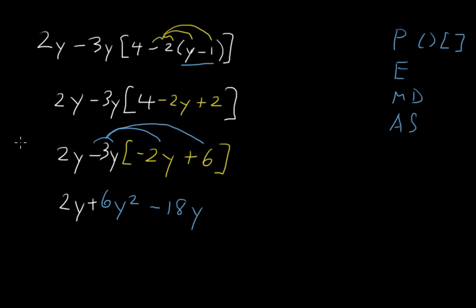Now we can combine like terms. For our final answer we have 6y squared. We have 2y and negative 18y, which gives us negative 16y. That was an example of using order of operations for this polynomial.